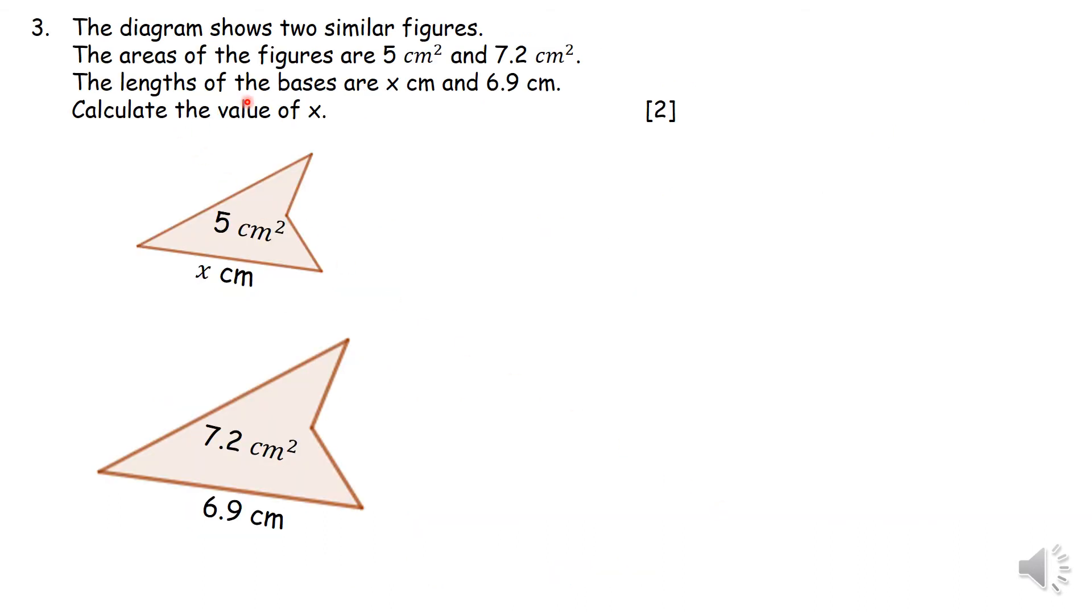Right, you have got two similar figures. It's very important that you are told that these figures are similar. The areas of the figures are 5 square centimeters and 7.2 square centimeters, respectively. The length of the bases, one is x, and the other one is 6.9 centimeters. So we are supposed to calculate the value of x.